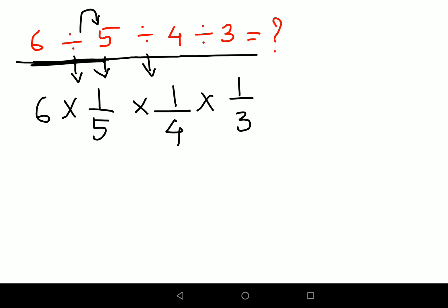Now if you look closely, things are getting cancelled: 3, 2, 2, and 2. So finally you get 1 upon 5 times 1 upon 2. The final answer is 1 upon 10, or 0.1.